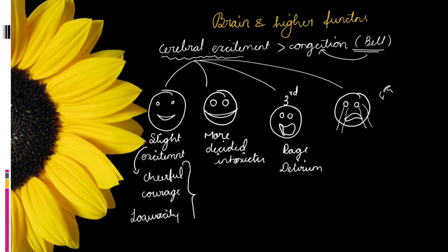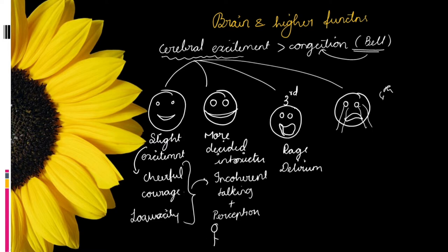As intoxication increases, Babu's courage and loquacity turns into incoherent talking with no meaning. He also develops problems with perception — he loses the sense of perceiving the correct size of objects. For example, a small log appears very large and he takes very long steps. This is seen in the second stage. Then he enters the third stage of rage and delirium.